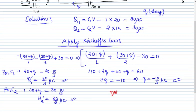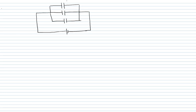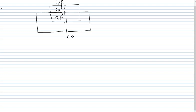This numerical is now done. In the sixth numerical, we are given three capacitors C1 = 1 microfarad, C2 = 2 microfarad, and C3 = 3 microfarad, all connected in parallel to a voltage source of 10 volts. We need to find the charge from the battery, total energy stored, and potential energy in the 3 microfarad capacitor.